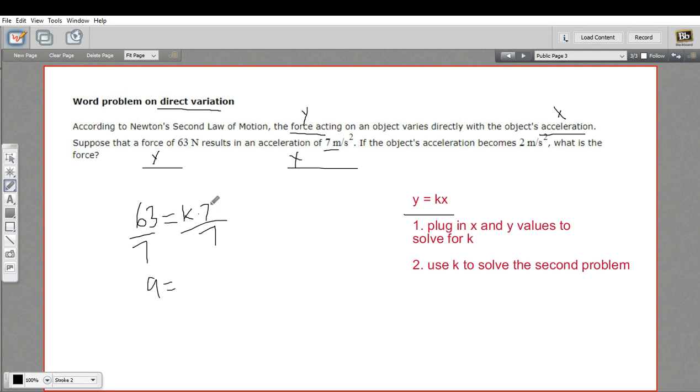And over here, the sevens cancel. So I just get k. So k equals nine. That's our constant of variation.